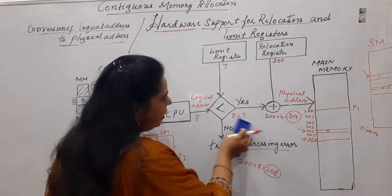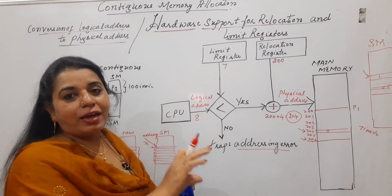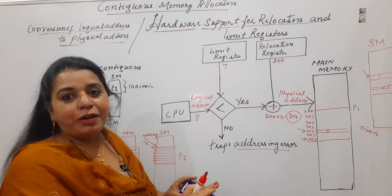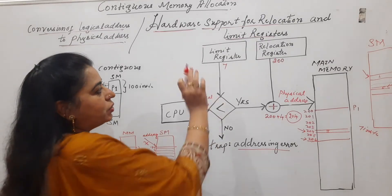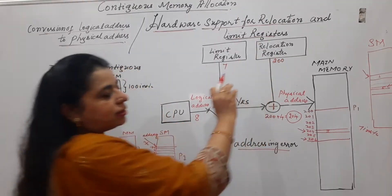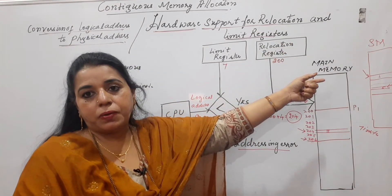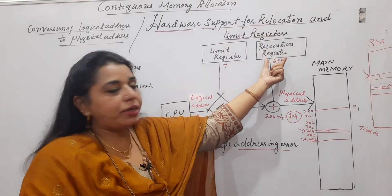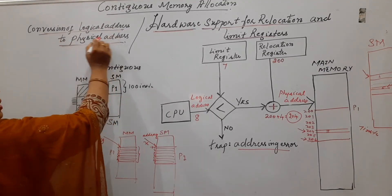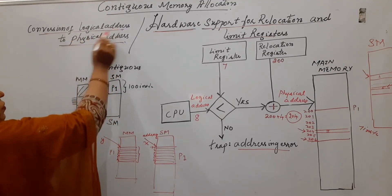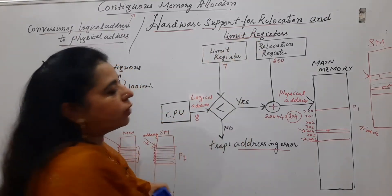The limit register simply indicates the size of the process. If there are 7 instructions, 7 locations are valid; if 30 instructions, 30 locations are valid. The relocation register holds the base address — the starting address of the process. In some textbooks this is written as the base address or the contents of the relocation register. This is how the diagram works for conversion of logical to physical address in contiguous memory allocation, also called hardware support for relocation and limit registers.